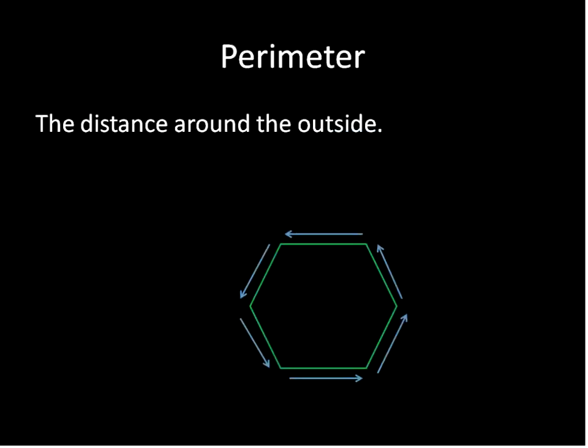Perimeter is the distance around the outside. As indicated by these arrows, you would go around the outside of a shape or polygon to find that perimeter.